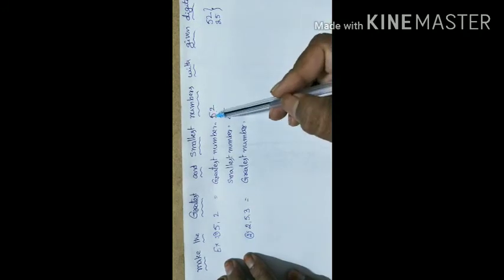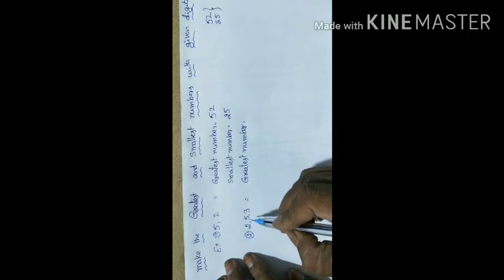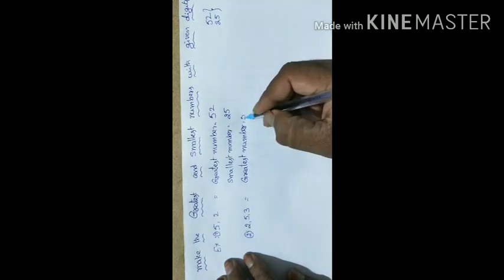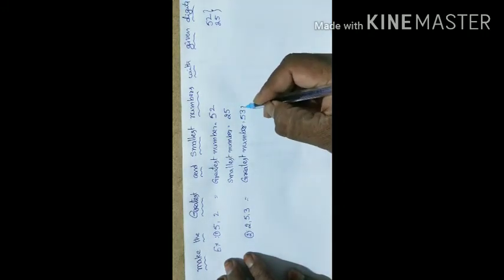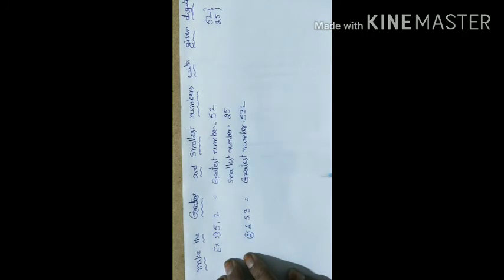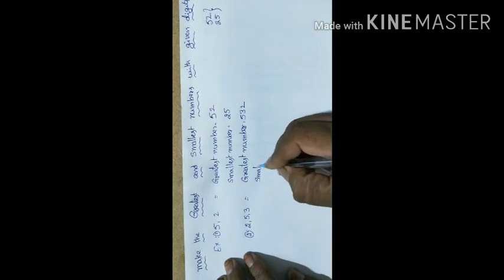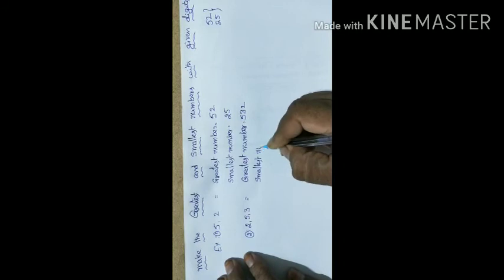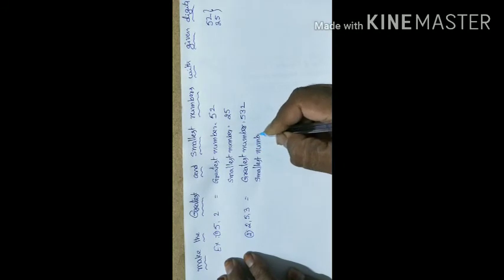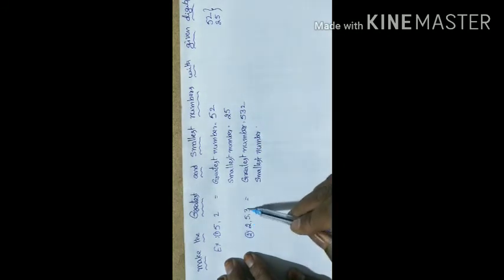The greatest number is in descending order, so it is 532. This is descending order. And the smallest number is 235, which is ascending order.